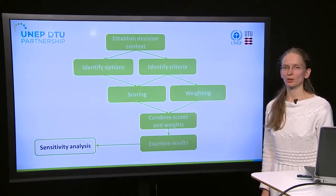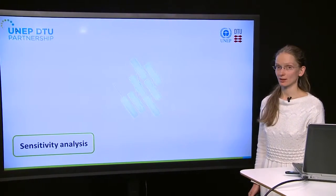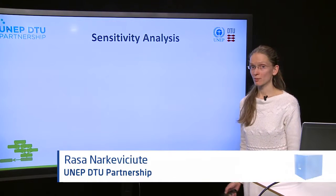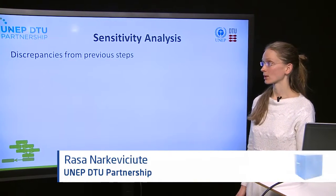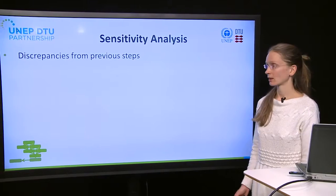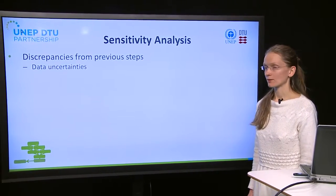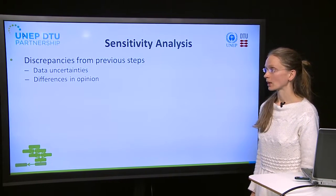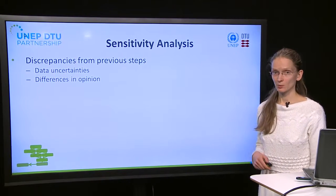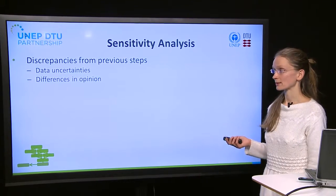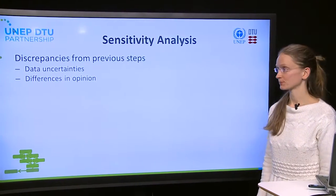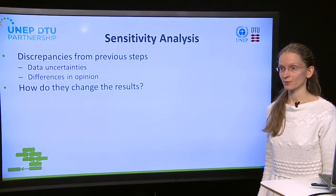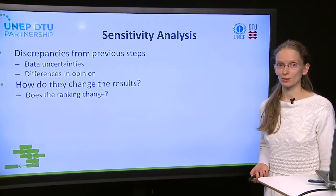The final step in the technology prioritization process is sensitivity analysis. In this step we will remember all the discrepancies that we have noted in the previous steps. For example, in the scoring step we have noted data uncertainties, and in the weighting step we have noted differences in opinion of stakeholders. The question is: how do they change the results? Do they influence the ranking of options?